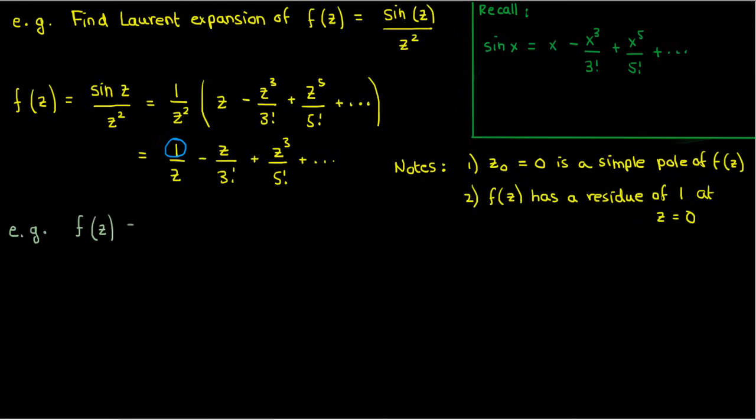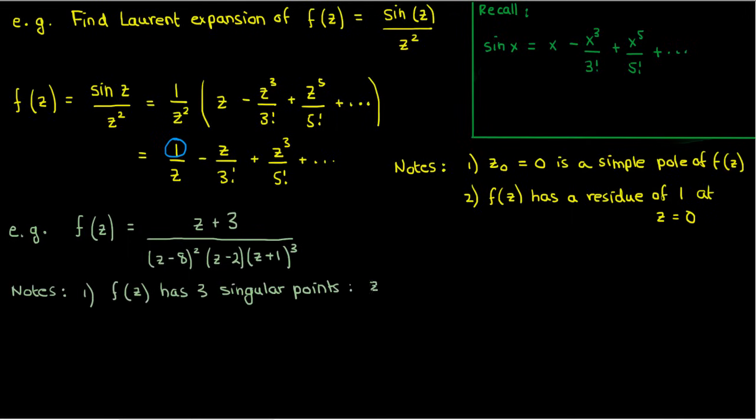Another example is a more complicated rational function. I won't write the Laurent series for this because it would take really long, but I will note a couple of important things. One is that there's three singular points here, one at z equals 8, another at z equals 2, and the third at z equals negative 1.